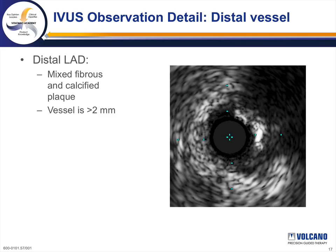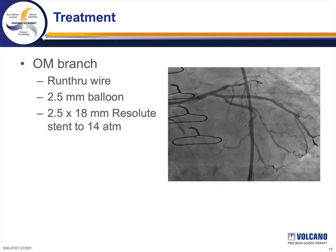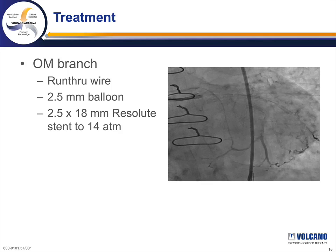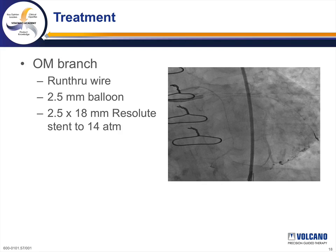This confirms that the vessel is large enough to perform intervention even in the distal vessel. Since the LAD was amenable to intervention and the nuclear perfusion study showed ischemia in both the anterior apical and anterolateral wall, the decision was made to treat both the obtuse marginal branch and the LAD. To treat the obtuse marginal branch, a run-through wire was advanced across the lesion, dilated with a 2.5 mm balloon, and a 2.5 by 18 mm Resolute stent was deployed at 14 atmospheres with excellent angiographic result.